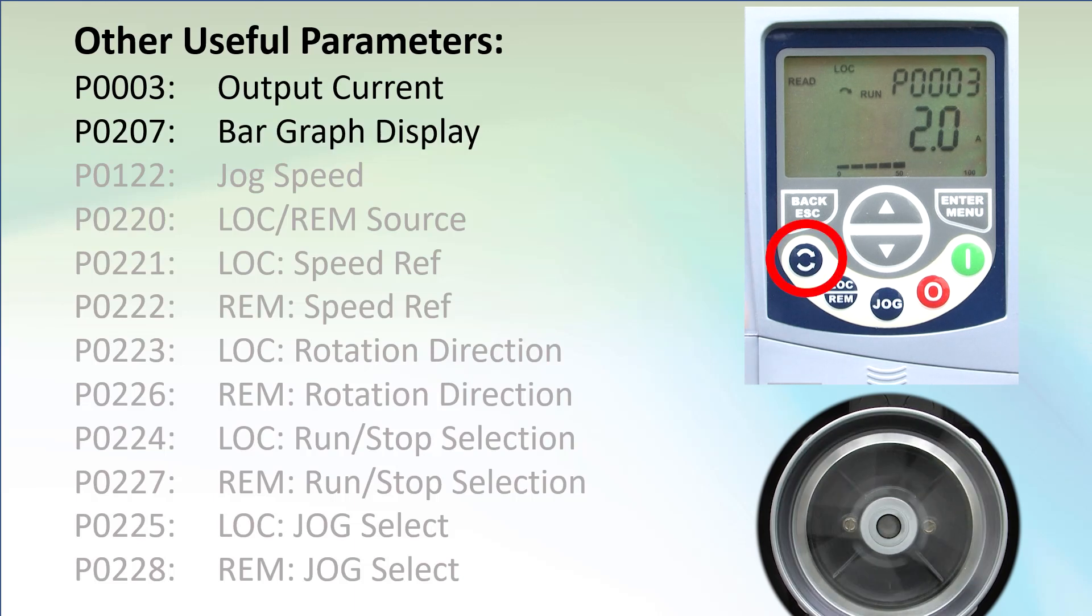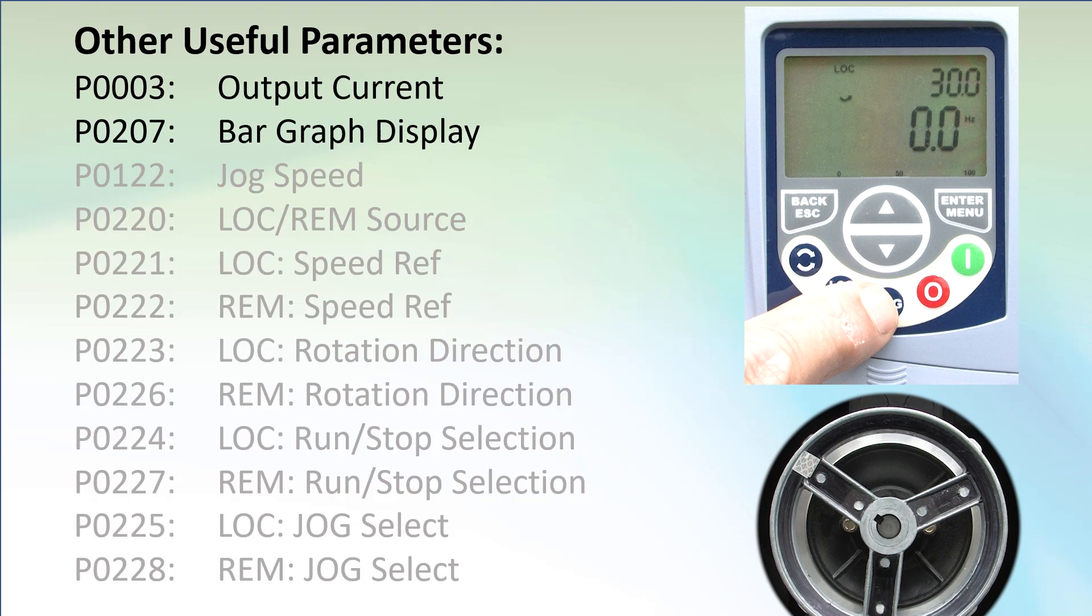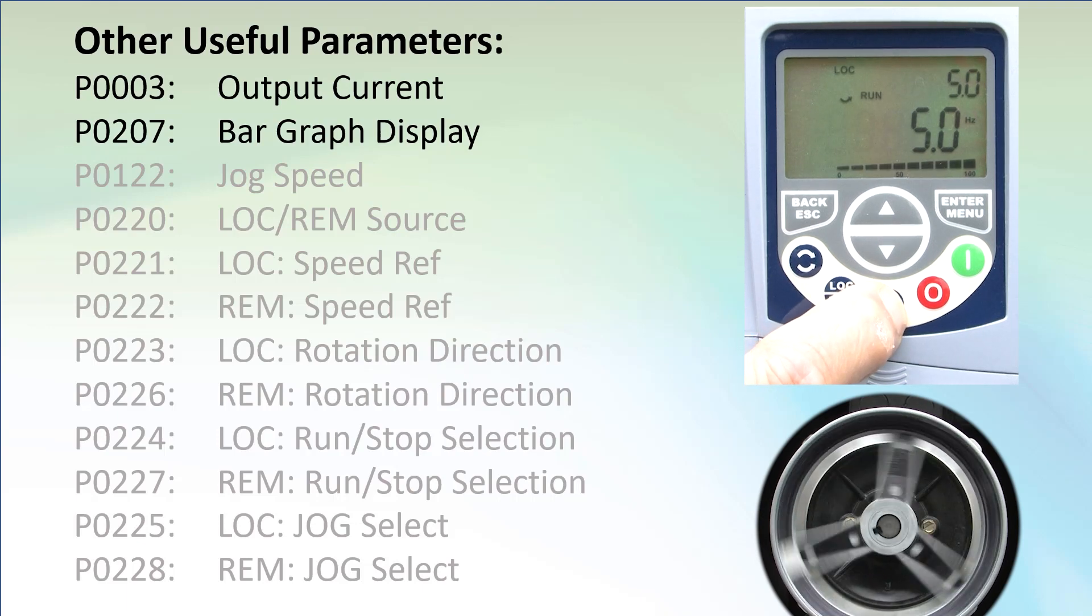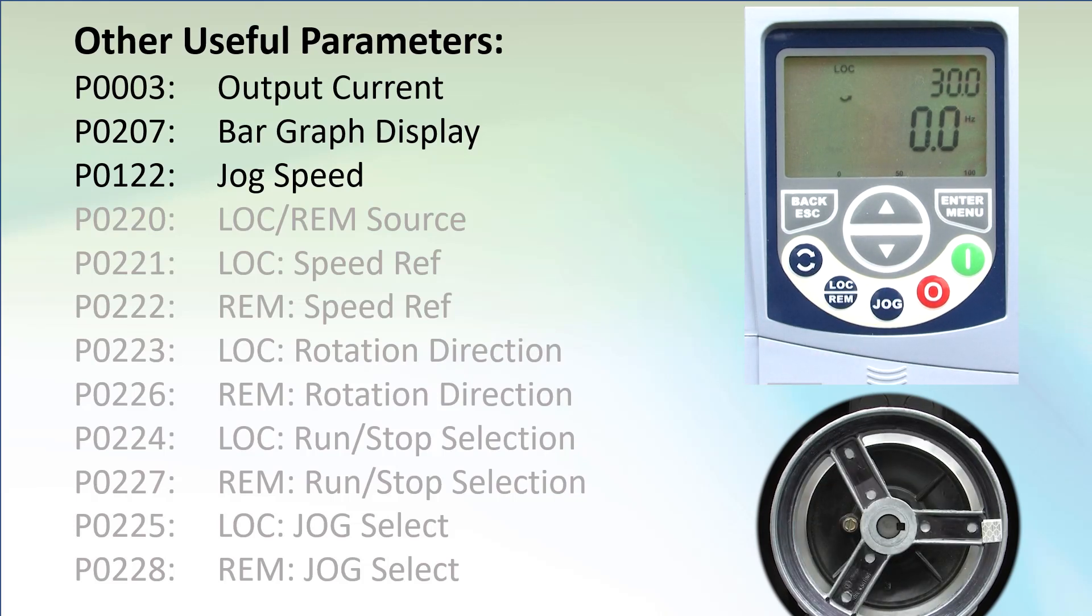Forward and reverse is controlled by this button. The motor ramps down and then back up in the other direction. Let's stop the motor and escape back to the top level menu. If I hold down the jog button, the motor moves at whatever speed you put in the jog reference frequency at parameter 122. The default is 5 hertz. And I love that you can switch between local and remote right here on the keypad.